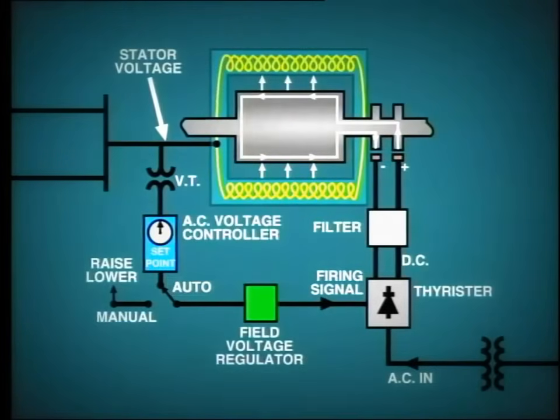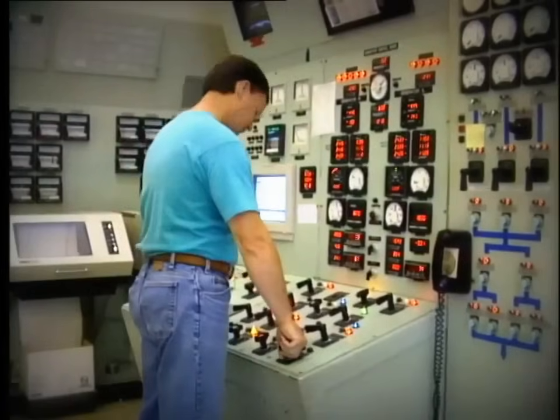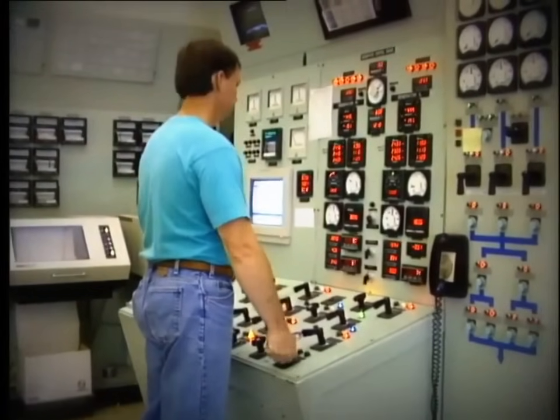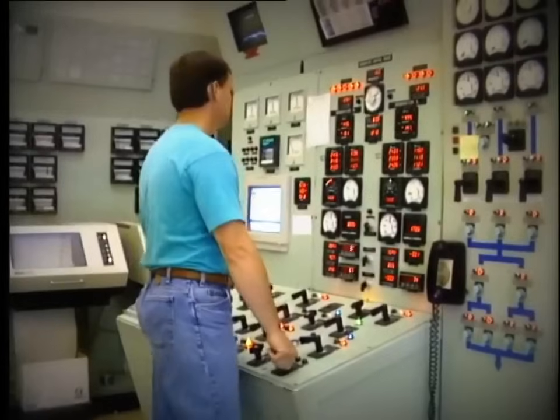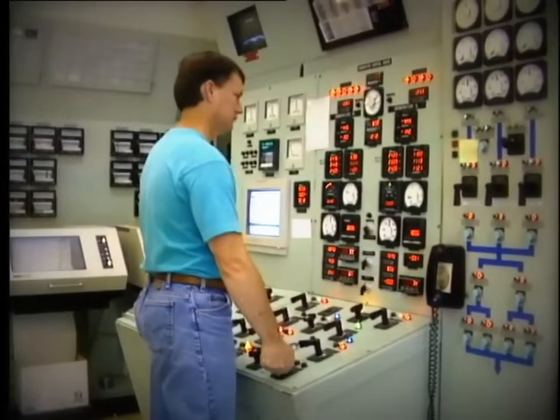That is from the AC voltage controller. This controller monitors the generator bus output voltage through VTs and automatically adjusts excitation to maintain the set point voltage. The operator can adjust this set point and thus exercise control while the excitation system is operating in auto.